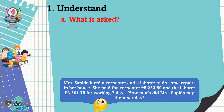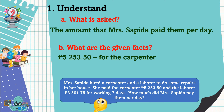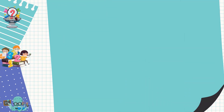We should know what is asked. The problem is asking for the amount that Mrs. Sapida paid them per day. What are the given facts? The given facts are: 5,253 pesos and 50 centavos for the carpenter, 3,501 pesos and 75 centavos for the laborer, and seven working days. We already understand the problem.